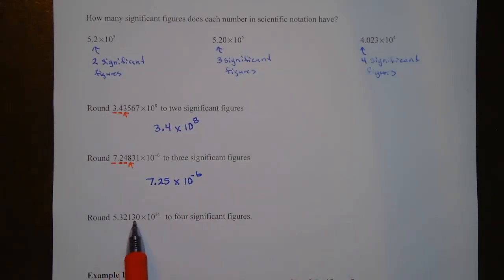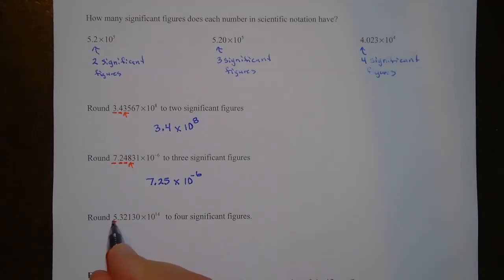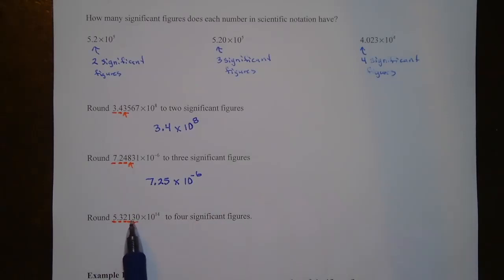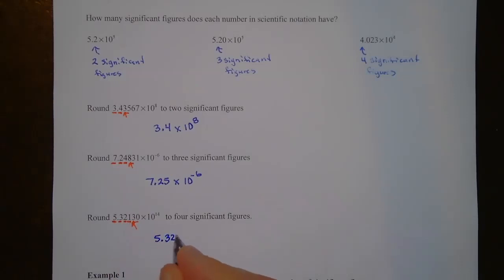This next one has one, two, three, four, five, six significant figures and I want to round to four significant figures. Here's one, two, three, four — I look at the fifth digit to determine whether to round the fourth. That's a 3, so I'm not going to round; I keep it the same. This becomes 5.321 times 10 to the 14th.